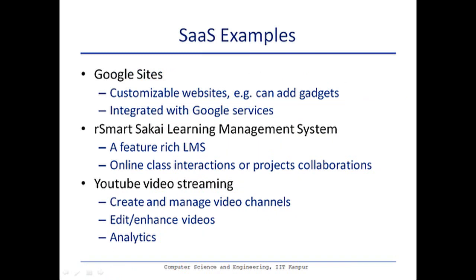Some examples of SaaS are Google Sites, R-Smart Sakai Learning Management System, and YouTube video streaming. In the case of Google Sites, one can customize the website by adding widgets and integrating with Google services. Each individual user can customize the service for their own needs — for example, in Gmail you can set different themes and filtering rules — without doing any coding or being aware of where the application is deployed.